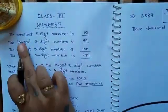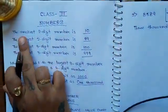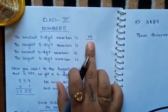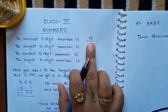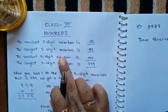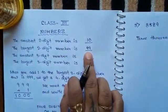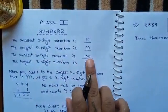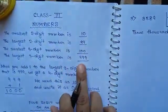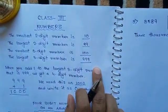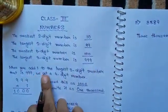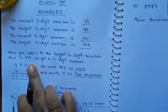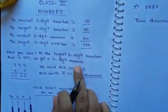In class 2, you have learnt about these things. The smallest 2-digit number is 10 — yes, you all had learnt this. The largest 2-digit number is 99. The smallest 3-digit number is 100. The largest 3-digit number is 999. When you add 1 to the largest 3-digit number, that is 999, we get a 4-digit number.